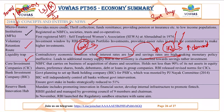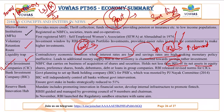During a liquidity trap, monetary policy — the RBI's policy tools — fails to revive demand. Instead, fiscal policy — the government's budgetary policy — becomes the more effective tool. Core Investment Companies (CICs) are large NBFCs that invest more than 90 percent of their assets in equities, preference shares, bonds, debentures, etc. Investing 90 percent or more in these markets qualifies a company as a Core Investment Company.